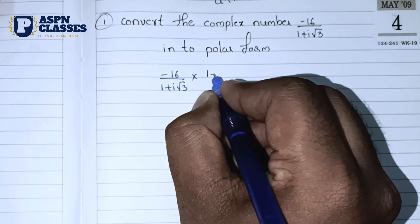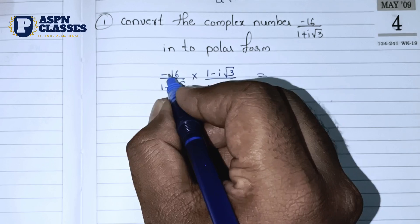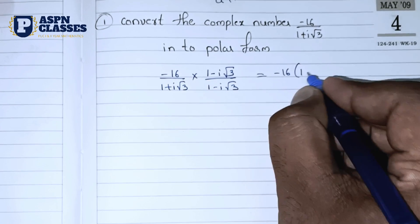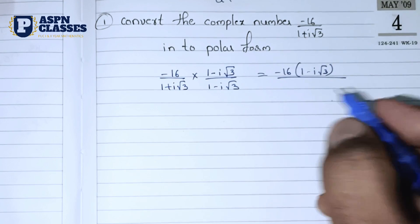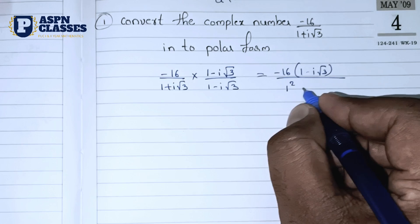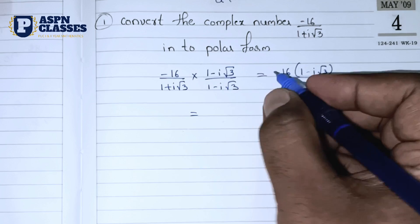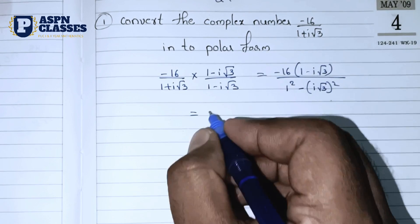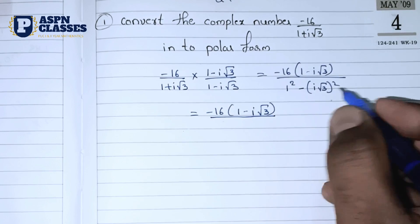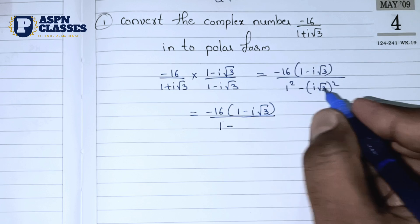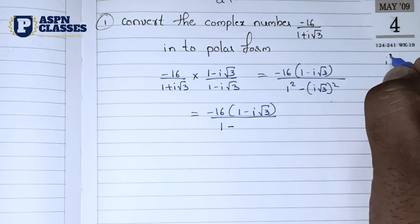Now we have to multiply and divide to simplify this. We observe the (a plus b)(a minus b) identity, which gives a squared minus b squared. We calculate 1 squared minus (i√3) whole squared. Since i² equals minus 1, minus i squared gives plus. With root 3, 3 plus 1 equals 4, so we have root 3 and 4 simplifying.